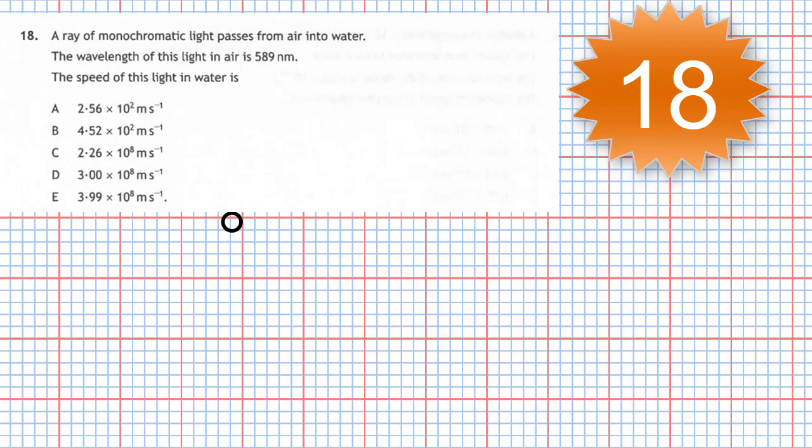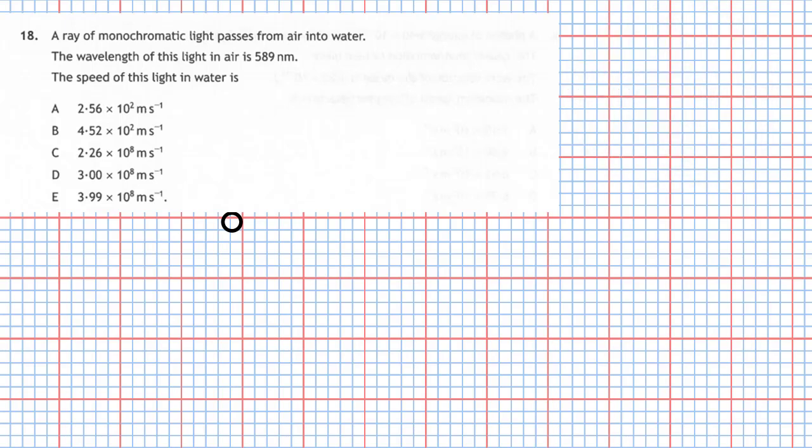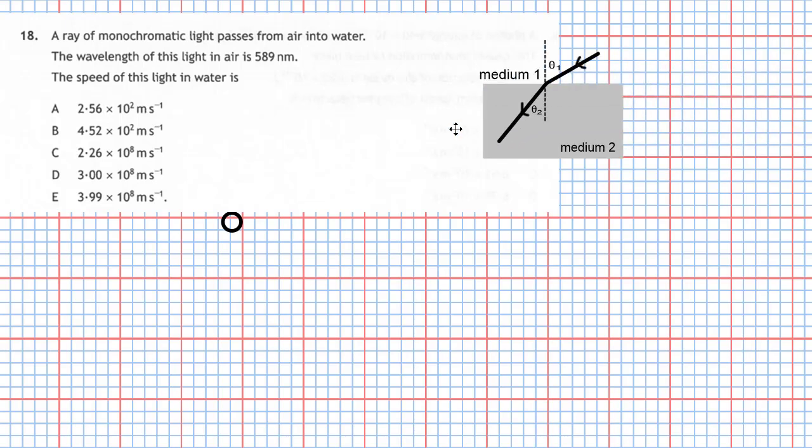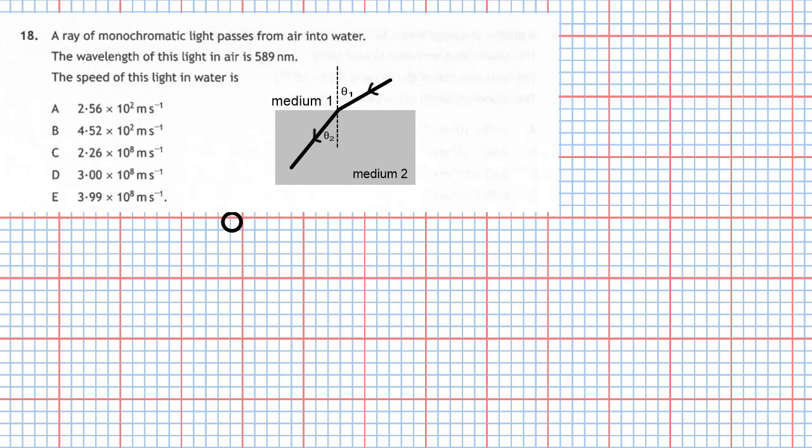Question 18 from section 1 of the 2019 Higher Physics examination. A ray of monochromatic light passes from air into water. The wavelength of this light in air is 589 nanometers and the speed of this light in water is... and we're given five options. Now let's take a look at the ray diagram of what's happening.